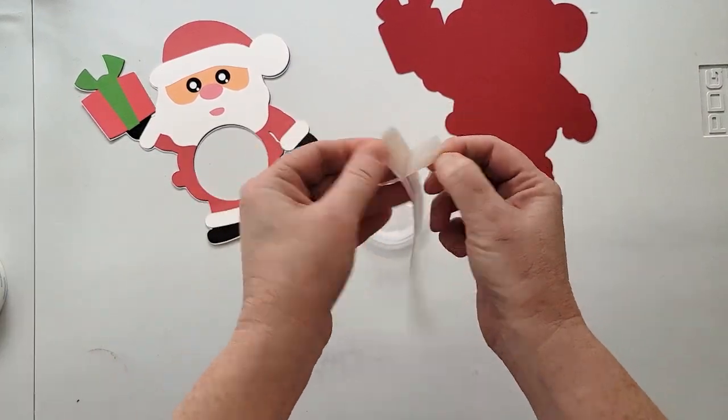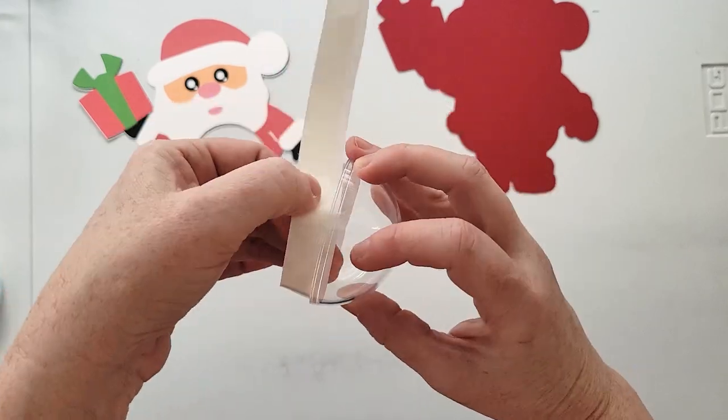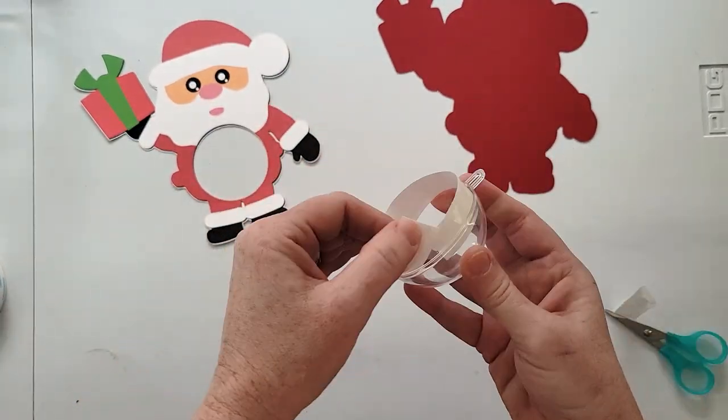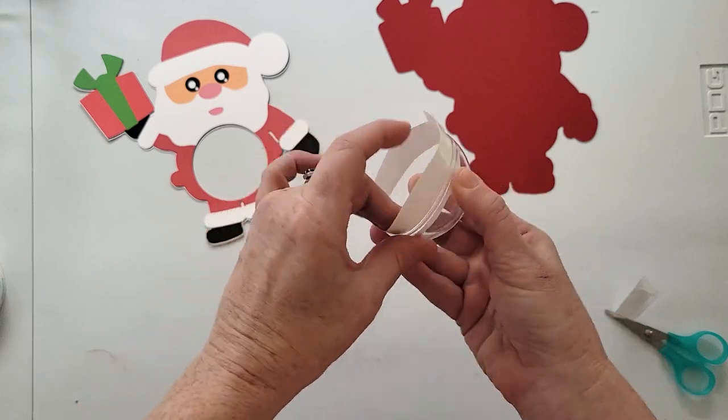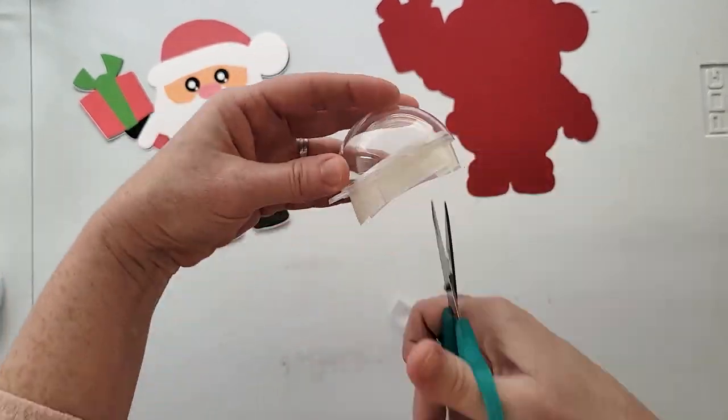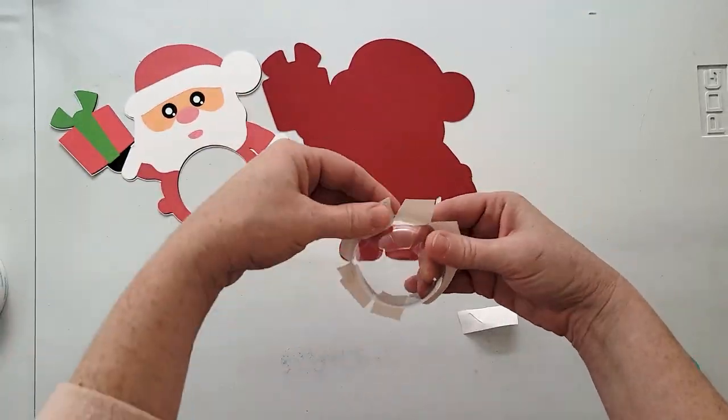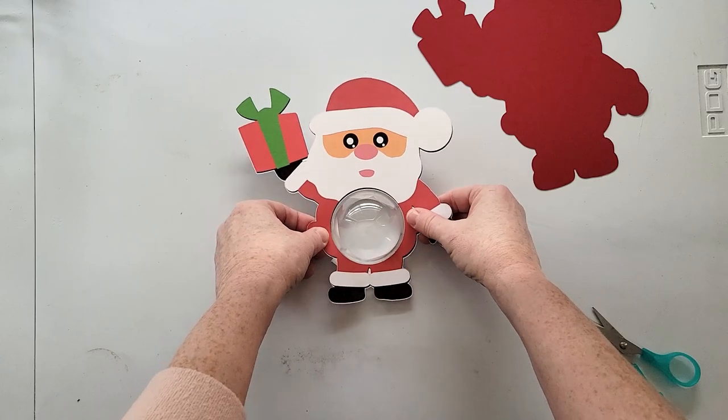Or you can use some clear fillable plastic ornaments and then just attach some double-sided adhesive to a piece of copy paper that you can then stick around the outside edge of the ornament. Cut some slits in it so you can fold it up.